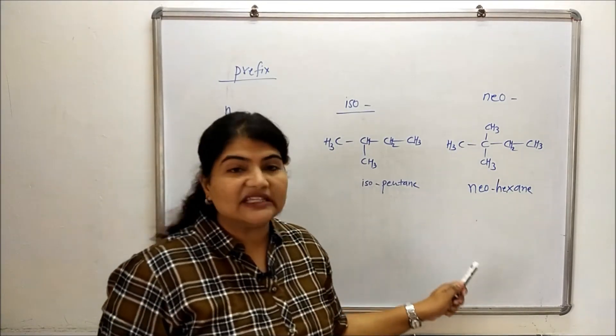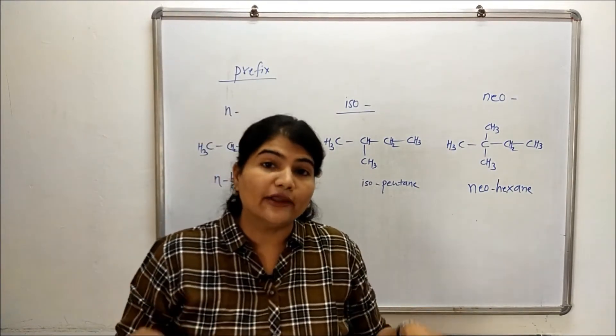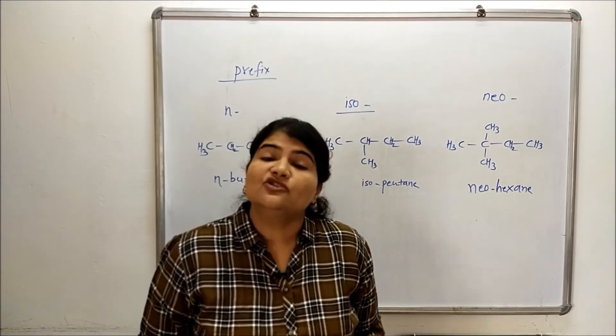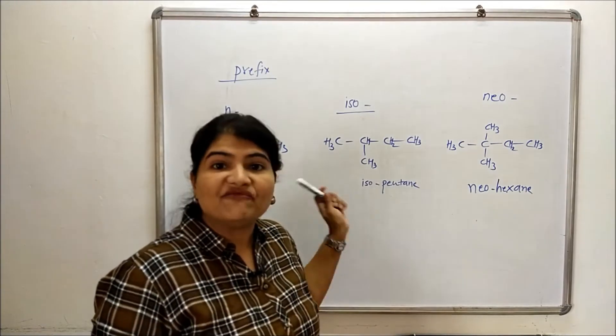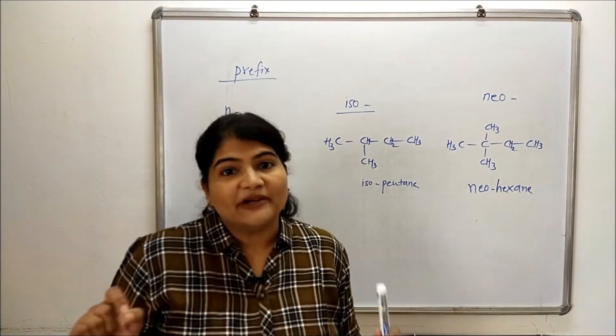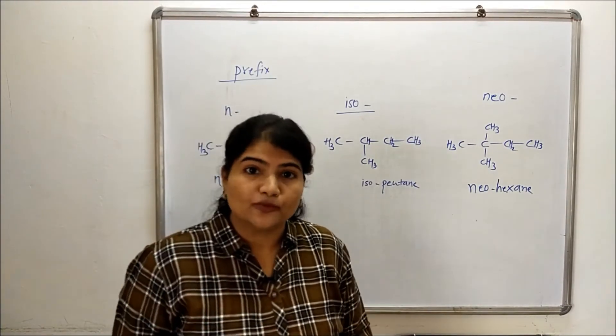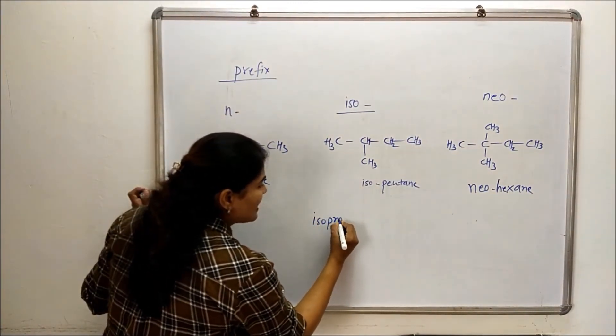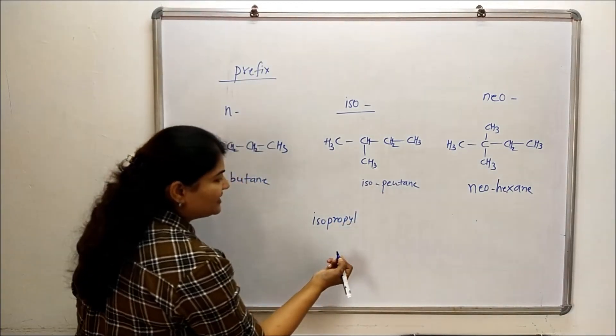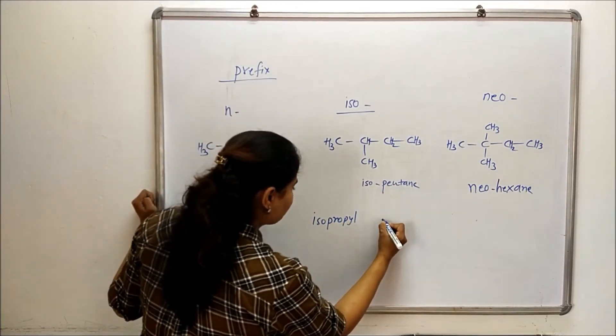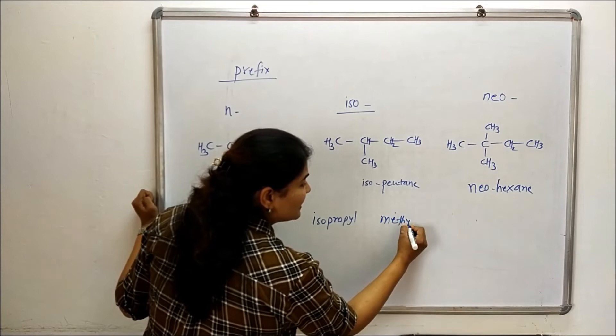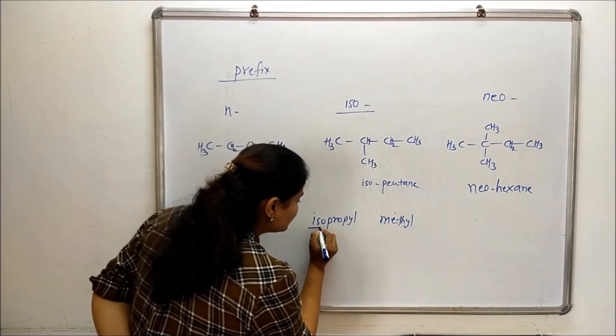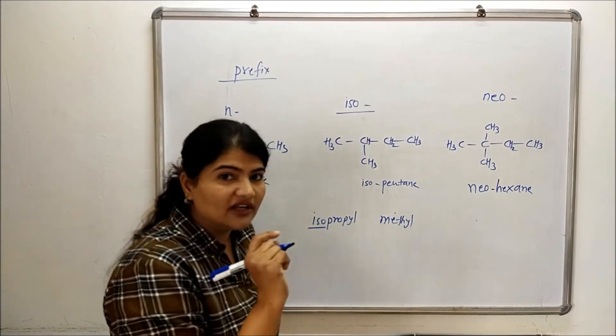One more thing I want to add. If you are using some of these prefixes during your IUPAC nomenclature, which is allowed to an extent, then please do not consider these prefixes while alphabetizing your alkyl groups. For example, if I am having isopropyl as my alkyl group and there is a methyl group, then while you are alphabetizing your organic compound, you should not consider iso for the purpose.